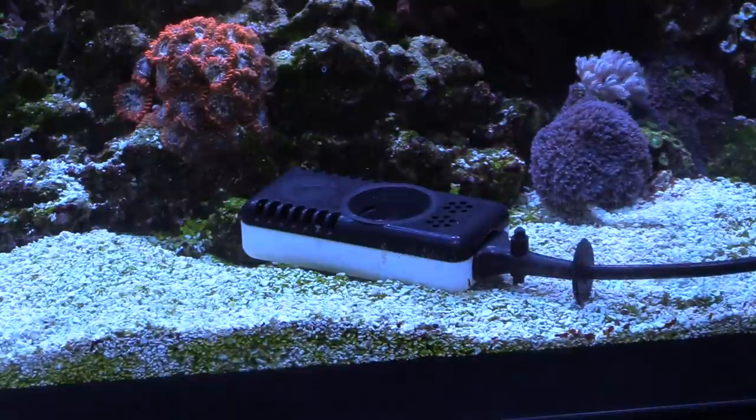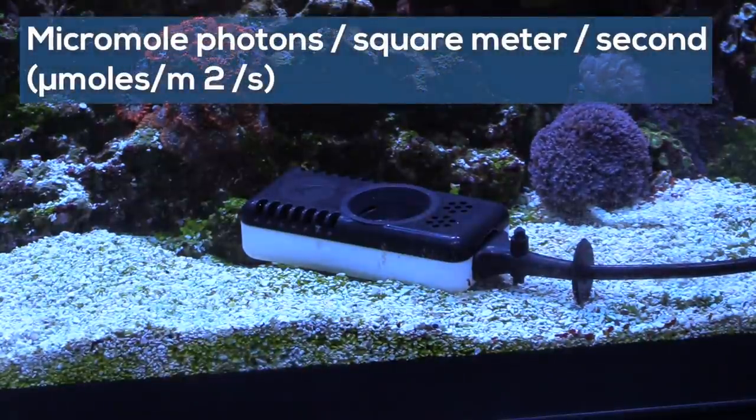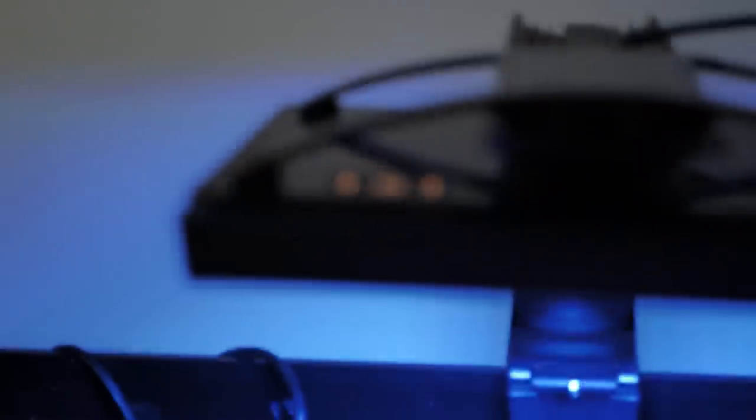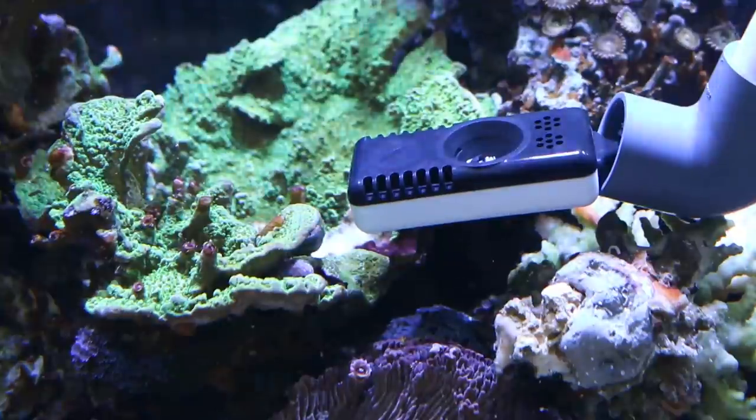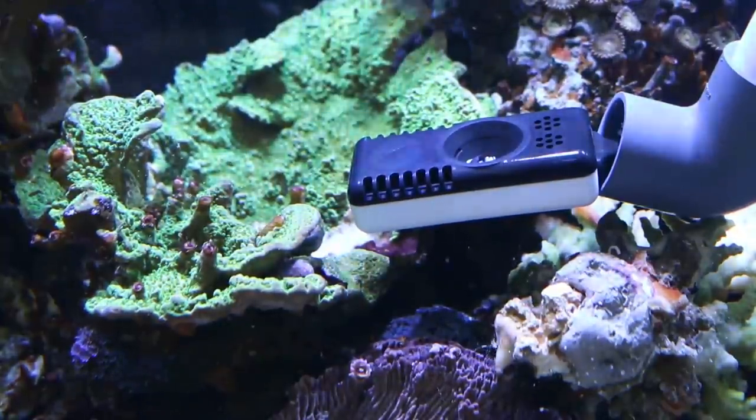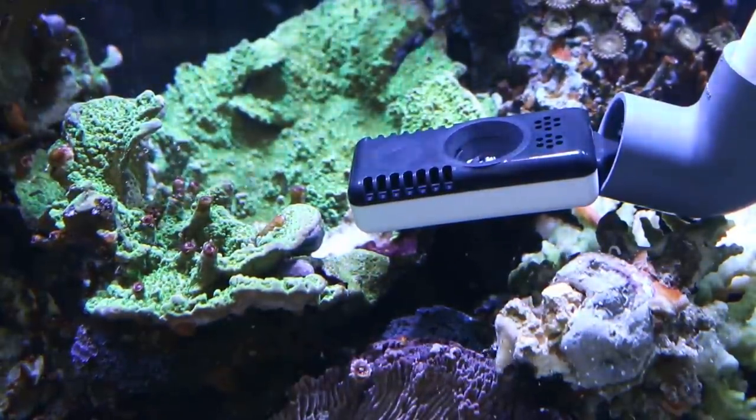PAR is measured with a PAR meter. The unit of measurement is micromole photons per square meter per second. In the hobby, we refer to PAR levels as simple numbers like 150. PAR measurements are made by placing a sensor underwater. PAR is relative to distance from the light source.